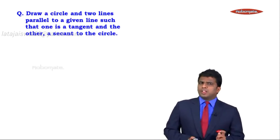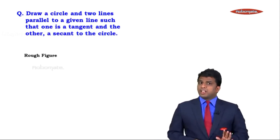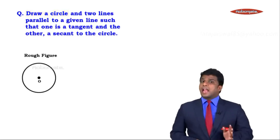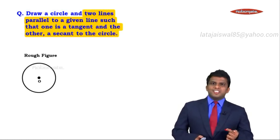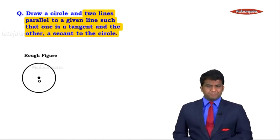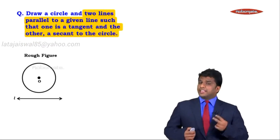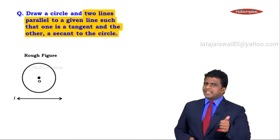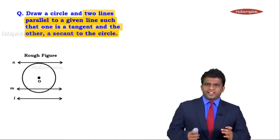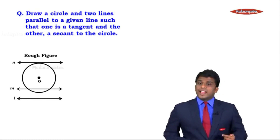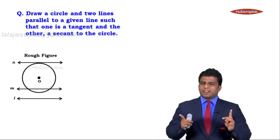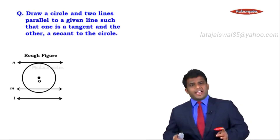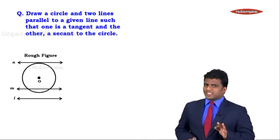Let's analyze the figure by drawing a rough figure. We have a circle with center O, and we need a given line for which there need to be two more lines parallel to it. This is the given line L. Lines M and N are both parallel to line L, but line N has to be a tangent and line M has to be a secant.